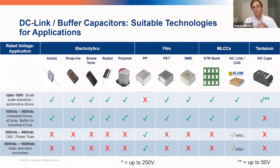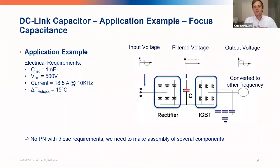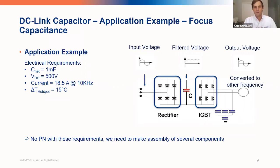For higher voltage you're going to see a lot more films; once you get into medium to lower voltage you might start seeing more aluminum and ceramics. Now we're going to use two different examples — one focusing on capacitance and the other on ripple currents. In this first application, we're looking for a total capacitance of about one millifarad at 500V DC, with a ripple current of 18.5 amps at about 10 kHz and a delta temperature for the hot spot of about 15°C. Based on these parameters, no single part meets these requirements, so we'll need an assembly of several components, focusing on aluminums and films.